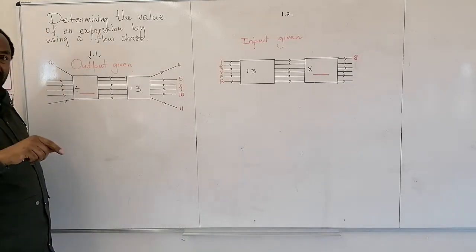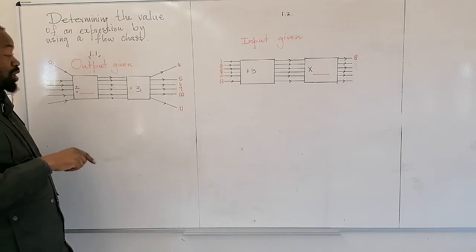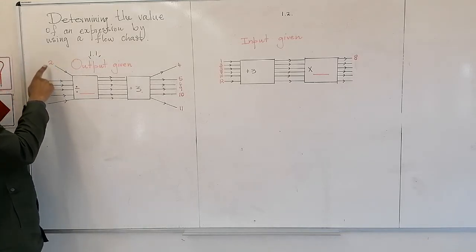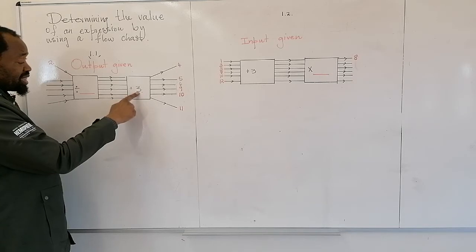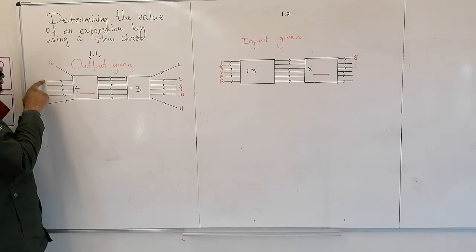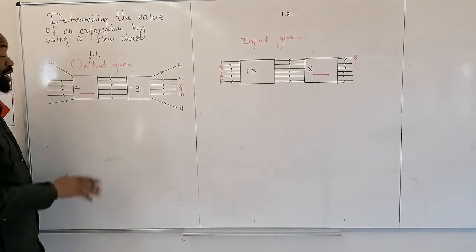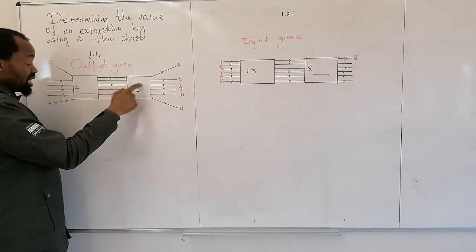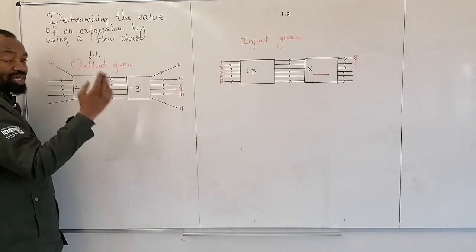How do we do that? First of all, you take the ones that you are given and use them reading the rule. Here it says 2 divided by a certain number that you don't know, plus 3, is giving us a 4. A certain number divided by a number that you don't know, plus 3, gives us a 5. I am going to use these three things to determine that number.